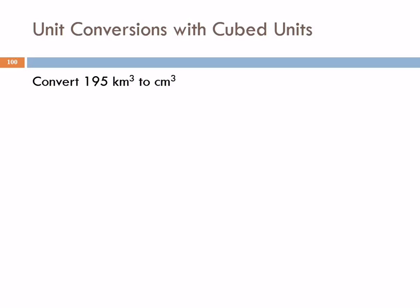So here we're converting 195 cubic kilometers to cubic centimeters. When we have squared or cubed units, I think a good strategy is to first figure out how you would do the conversion without that power, the square or the cube, and then put it back later. So we're going to pretend that we're converting 195 kilometers to centimeters.